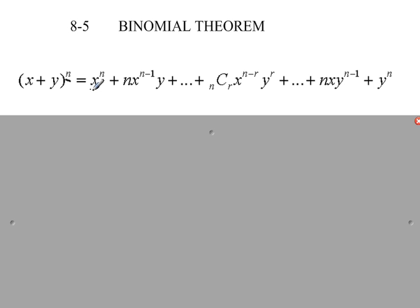First, let's look at the x's. We have x to the n, x to the n minus 1, and so on, until we end up with x to the first and then no x's. So one part of this shortcut means the powers of x will go down as we progress along the sequence. Also notice there are no y's at the start, then a y appears, and the powers of y keep going up until you end up with y to the n.